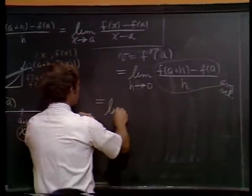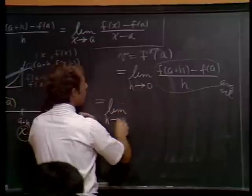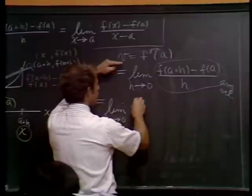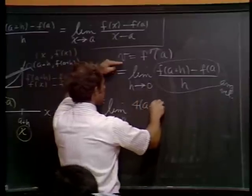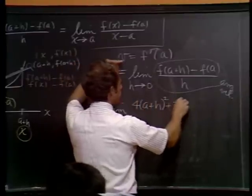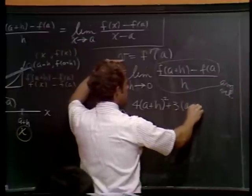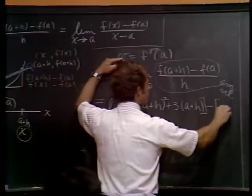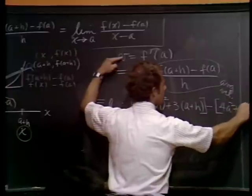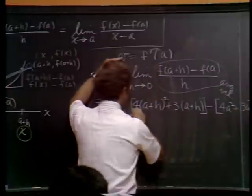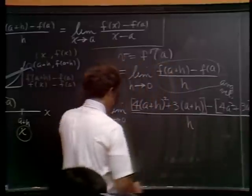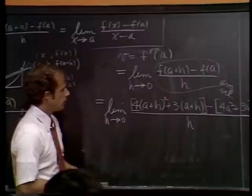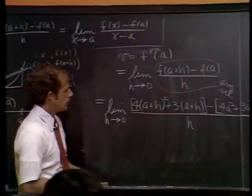Now this problem is, I guess, relatively easy compared to the ones we just talked about. And that is our function is just a polynomial. So if we plug in 4a plus h for f, there is f at a plus h. Here's f at a. And we're supposed to divide all that by h.